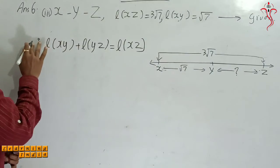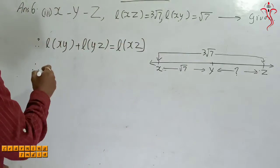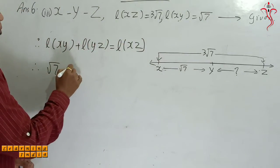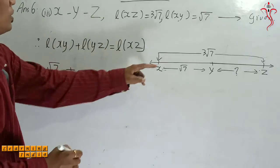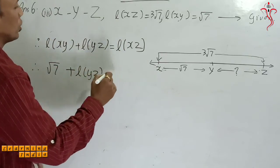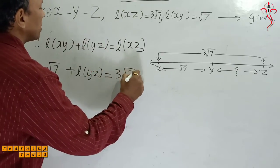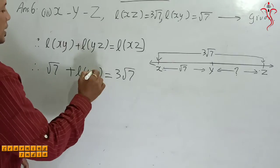So therefore, what it will be? XY ka value is √7, so I will write √7 plus YZ ka value is not given, YZ is equal to XZ ka value 3√7.